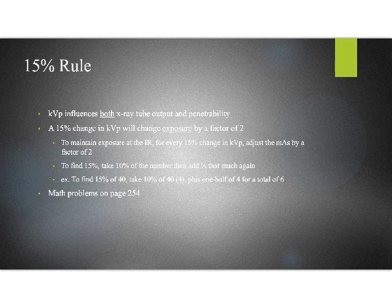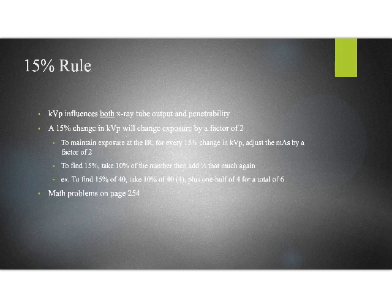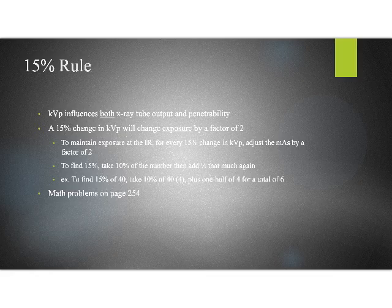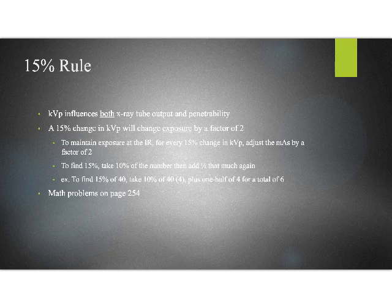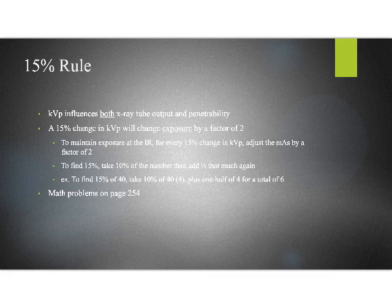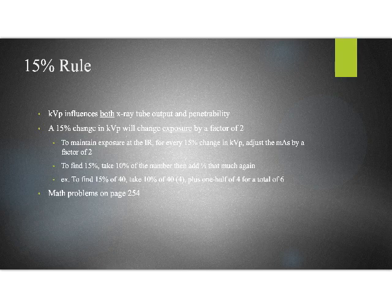All right. I'm going to change gears now. I'm going to talk about the 15% rule. Here's where stuff gets really muddy again. KVP doesn't just control quality. It also controls quantity. As we increase the potential difference across the x-ray tube, we're sucking more electrons across the x-ray tube. So we're also increasing the quantity of x-rays that are being produced. So mass just controls quantity. KVP controls both quality and quantity. We're going to say it's primarily the way that we control quality, but it also does control quantity, at least the amount that passes through the patient.